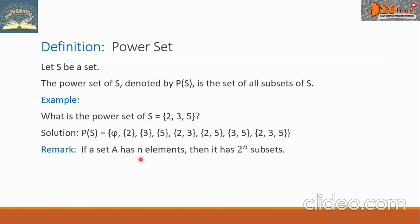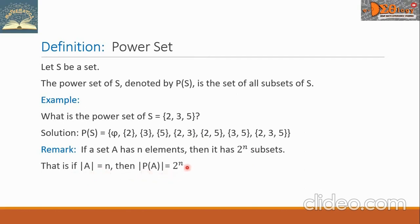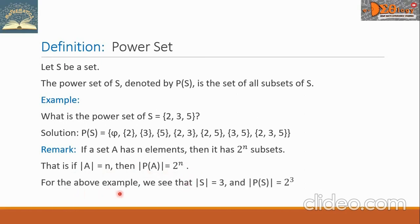If a set A has N elements, then it has 2 raised to N subsets. That is, if the cardinality of A equals N, then the cardinality of P of A equals 2 raised to N. For the above example, the cardinality of S is 3, so the cardinality of P of S equals 2 raised to 3, which equals 8. It means there are 8 subsets in the power set: 1, 2, 3, 4, 5, 6, 7, and 8.